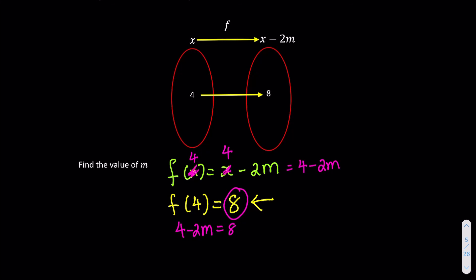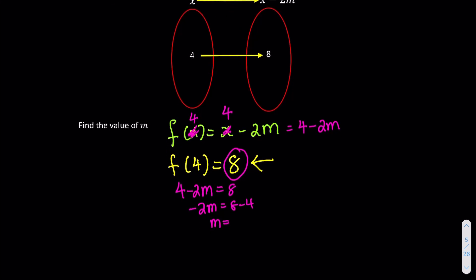So since we are the same, we can say that 4 minus 2m is eventually same with 8. So if we do the linear equations, we move the 4 to the right-hand side, become minus. So m is equivalent to, negative 2m is equivalent to 4. When you are together, it is the times go, they become divided. So 4 divided by negative 2. So m supposed to be negative 2. Then we are done.